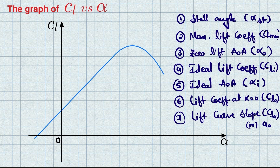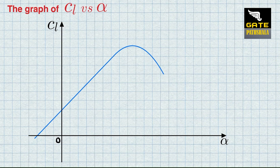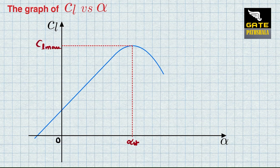Our interest is to understand these parameters and a few more things about this curve. The stalling angle, denoted by alpha_st, is the angle at which the airfoil stalls — that is, the lift coefficient will no longer increase with increasing angle of attack. The maximum lift coefficient corresponds to the stalling angle.